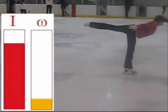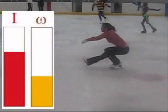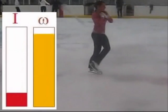These pictures illustrate how the moment of inertia and angular speed vary as the figure skaters change position from camel spin to set spin to finally upright spin.